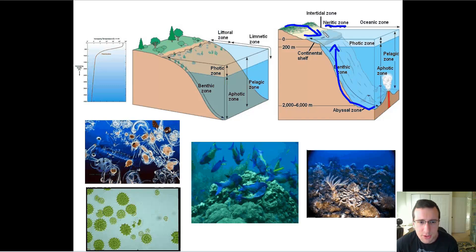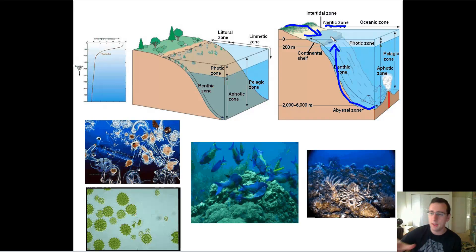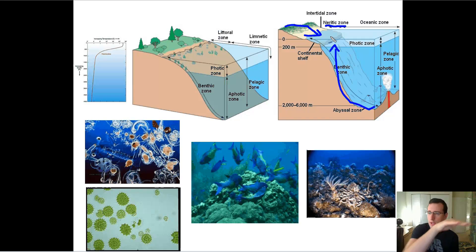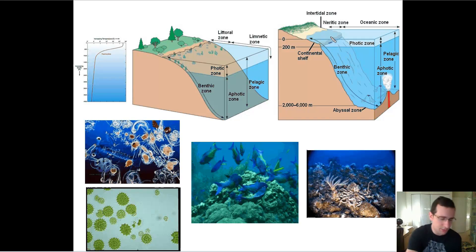There's also the intertidal zone. The intertidal zone is the zone that's sometimes above water and sometimes below water — it's the area that during high tide is below water, and during low tide is above the water line.